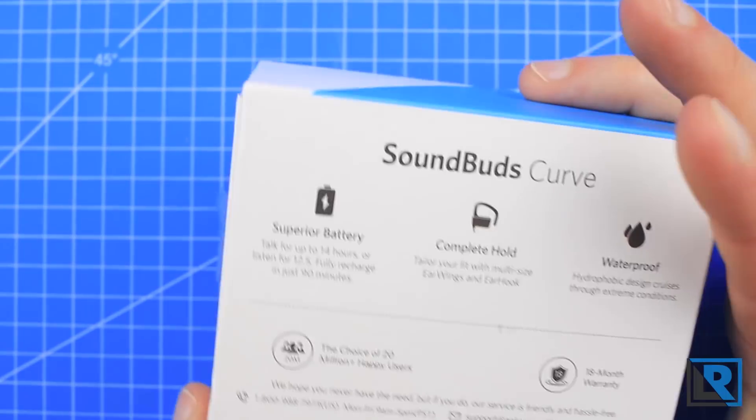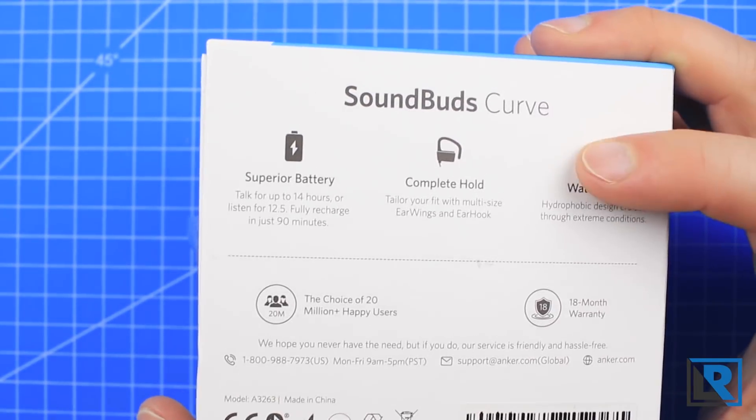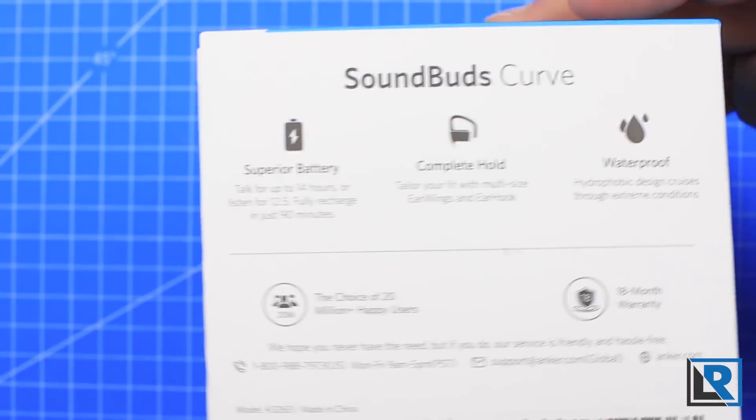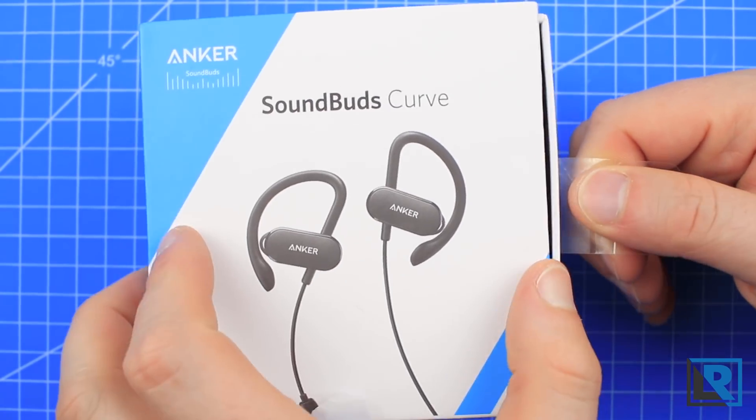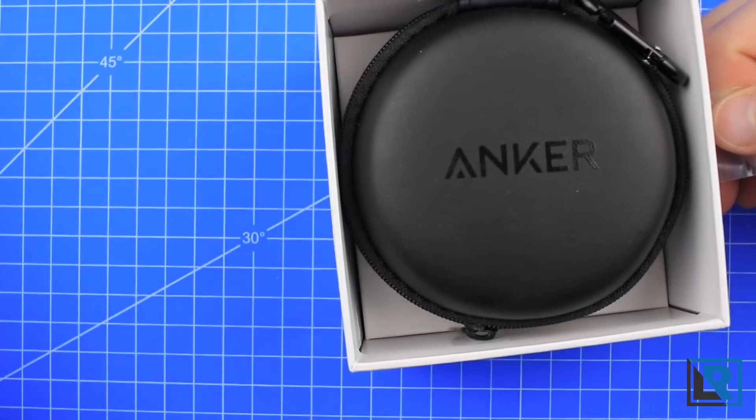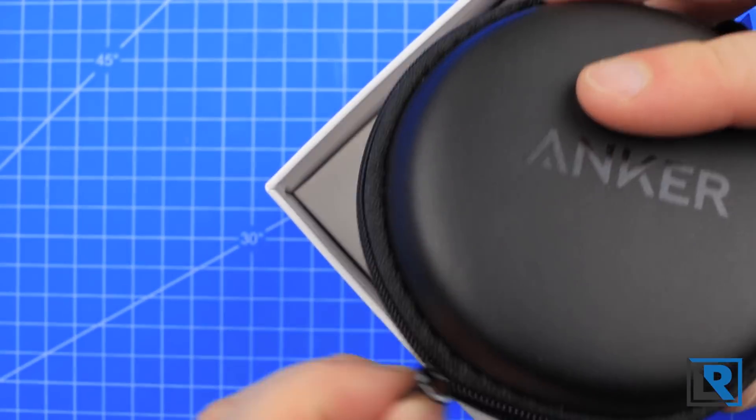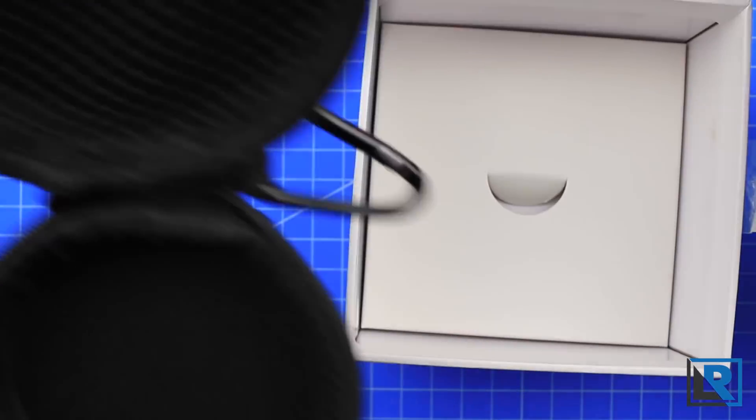So here's the box they come in. It's again a white and blue Anker box, and it says they're waterproof here on the back. Again, it shows you the specs, and this box is a little difficult to open, so they include this pull tab here, which is nice. Inside you get a carrying case, zippered carrying case, and this is where you can store your headphones and any charging cable you want.